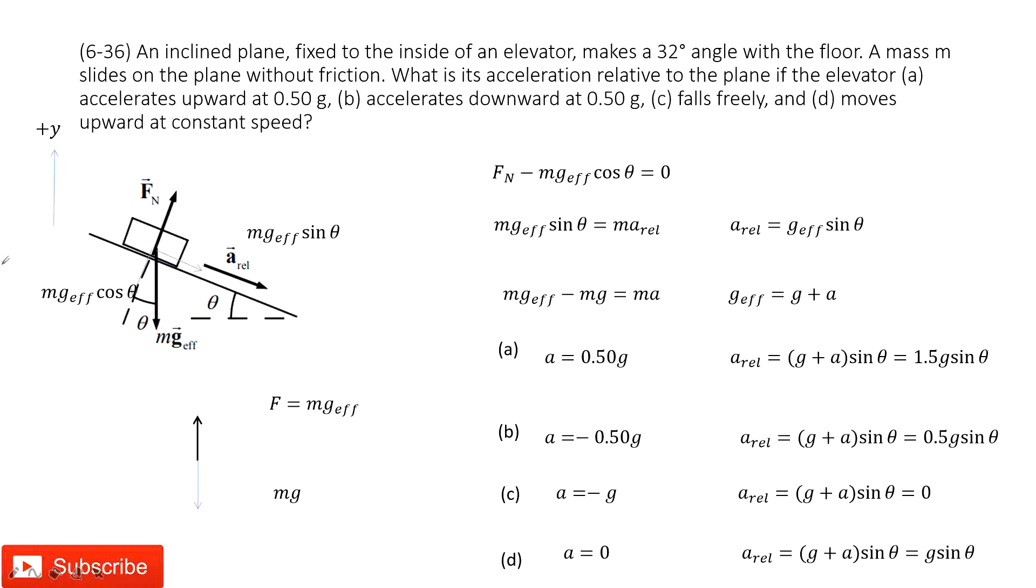We can see this is our very typical model. The object on the slope and then we need to find acceleration of the object to the slope. But then, the whole model is placed in the elevator and this elevator has different accelerations. So, how can you solve the problem?